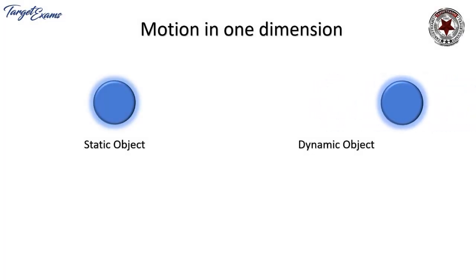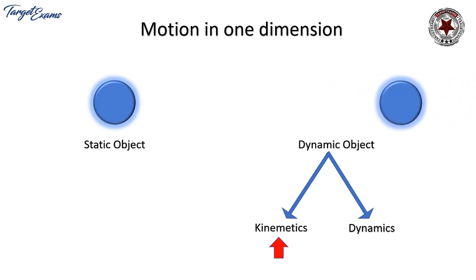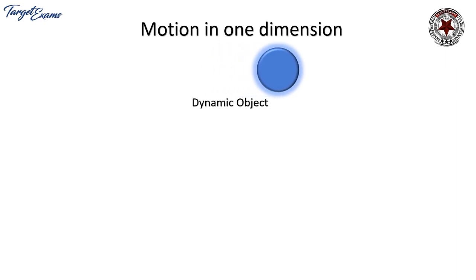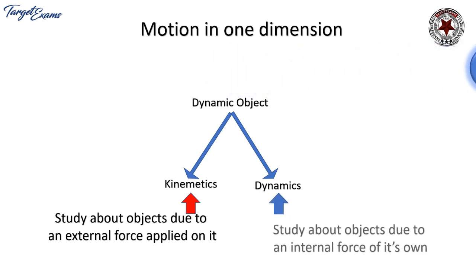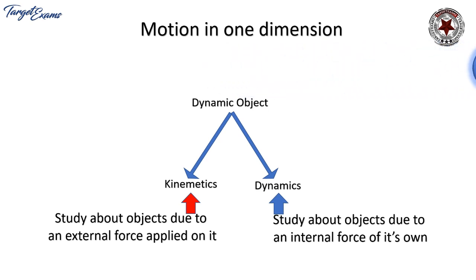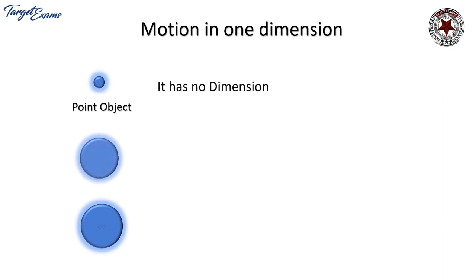Today we are studying motion in one dimension. We see two objects: a static object and a dynamic object. The dynamic object has two parts — kinematics and dynamics. We will focus on kinematics in this chapter. Kinematics is the study of an object's motion due to an external force applied on it, and dynamics studies objects due to an internal force of their own.